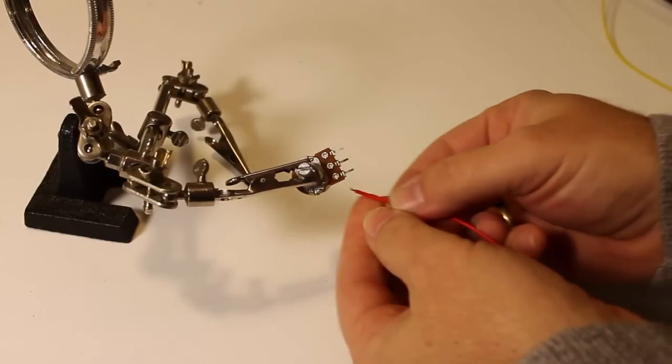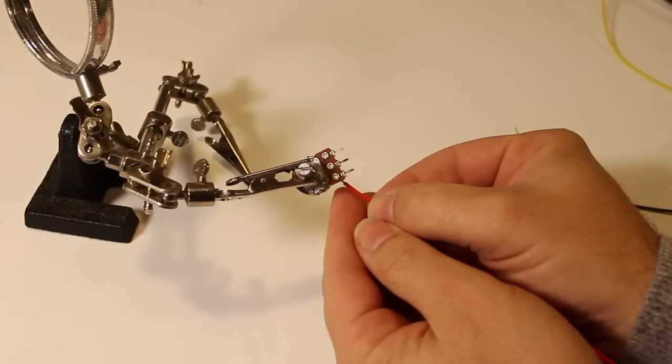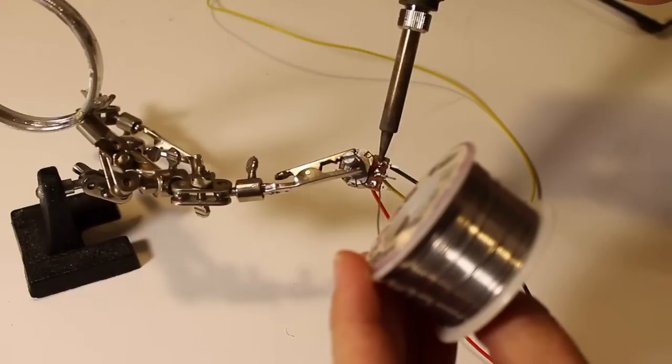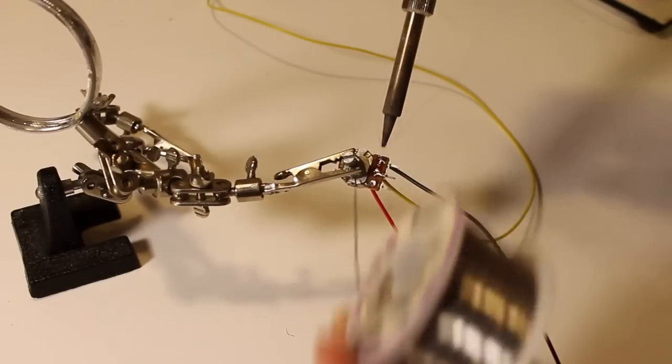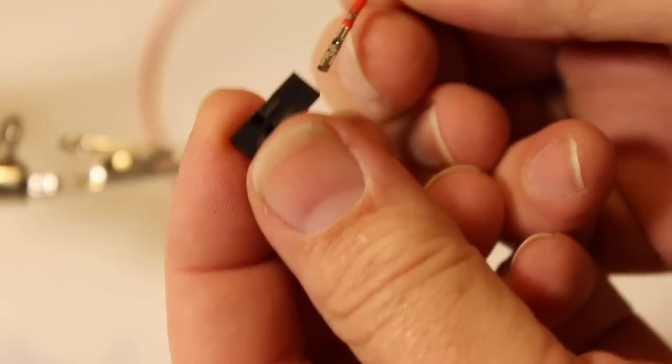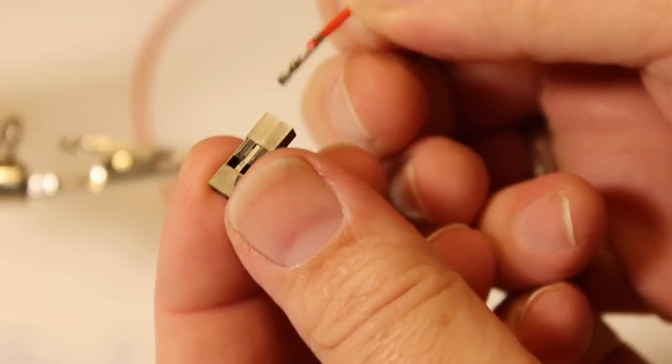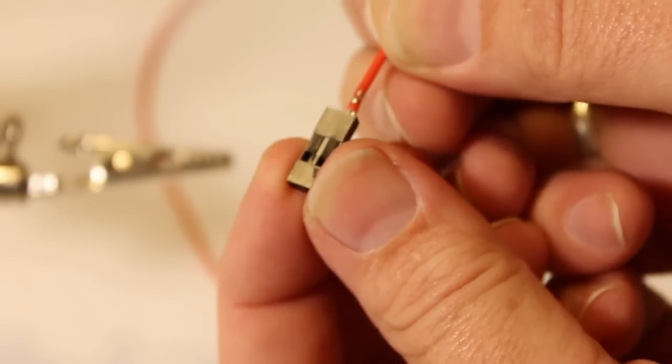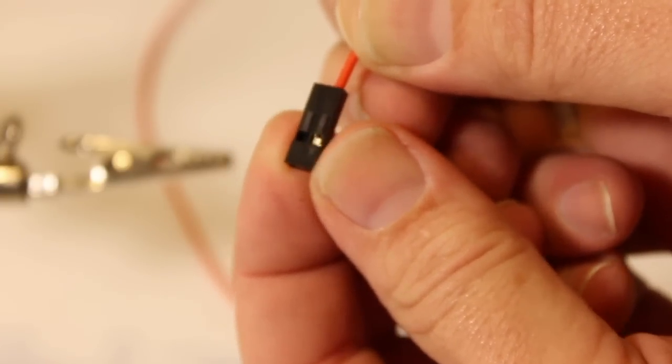For the potentiometer, use a different color for each of the three pins. Push the crimps into the housings, the open side of the crimp facing toward the hole on the bottom of the housing. Just push it in until you hear it click.